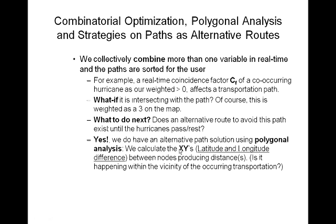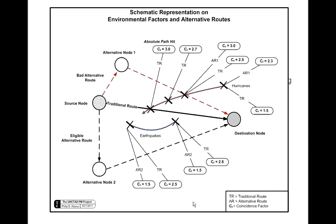We calculate the latitude and longitude between nodes, producing distances, to determine whether a hazard is happening within the vicinity of the occurring transportation path.